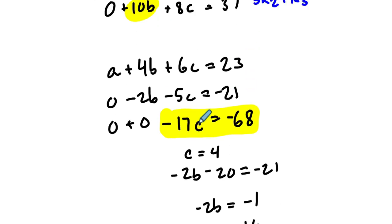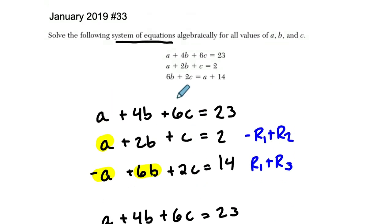Now a nice way to check this is to use a matrix on a calculator. On the calculator, what you're going to do is enter the coefficients of these numbers in this form. So you enter 1, 4, 6, and then the result, 23. And I'll show you this in a minute. 1, 2, 1, 2. Negative 1, 6, 2, and 14. And the calculator can then tell you if you're correct. So let's do that.